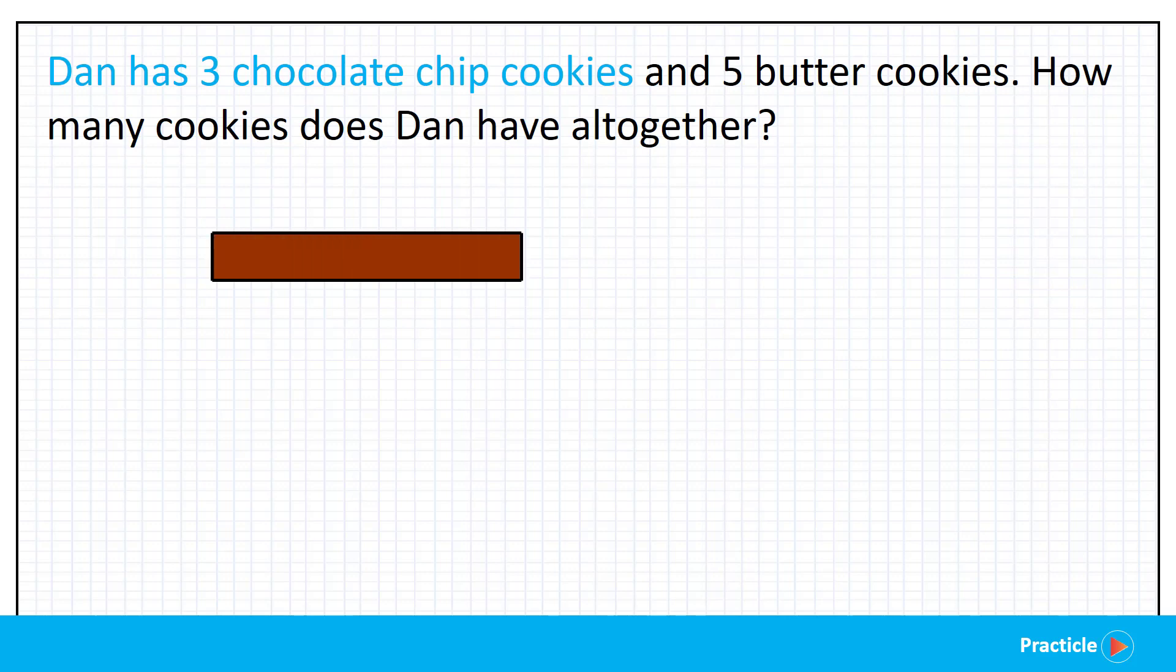Now this box, or bar, is going to represent the number of chocolate chip cookies that Dan has. Do we know how many chocolate chip cookies he has? He has 3 of them, correct? And we are going to write that number in the box. And well done everyone! We now have a bar that represents 3 chocolate chip cookies. So we are done with one part.